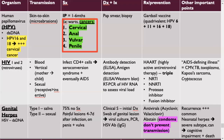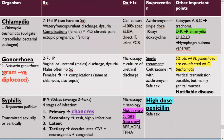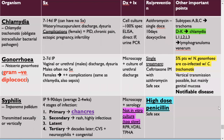The bacterial STIs are chlamydia, gonorrhea, and syphilis. Try to memorize which antibiotic treats each — azithromycin is generally a safe option for STIs, sometimes combined with another agent. Syphilis is easily treatable with penicillin.